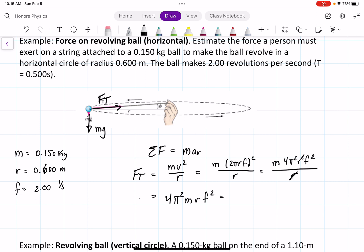We can plug in what we know: 4π² times m, which is 0.150, times r, which is 0.6, and then the frequency is 2 squared. If we plug that into our calculators, we will get 14.2, and since it's a force, we know that the units are going to be newtons.